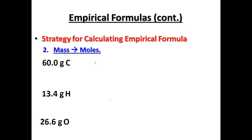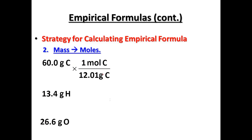Our second step is to go from mass to moles. Starting out, we have 60.0 grams of carbon, 13.4 grams of hydrogen, and 26.6 grams of oxygen. Using your periodic table: one mole of carbon equals 12 grams, so moles go on top so that grams can cancel.